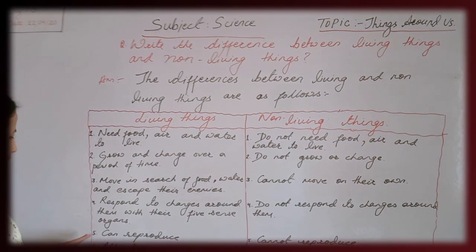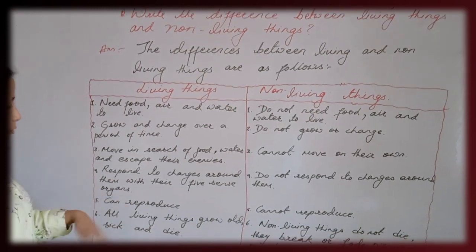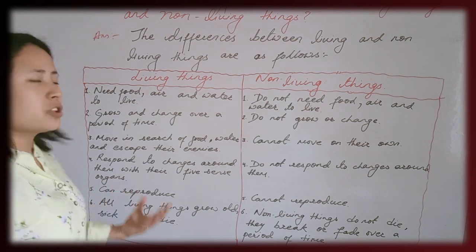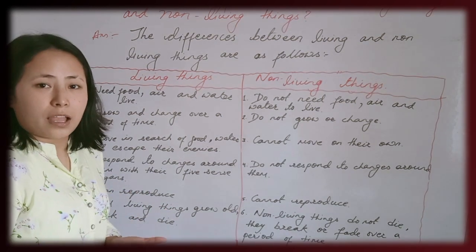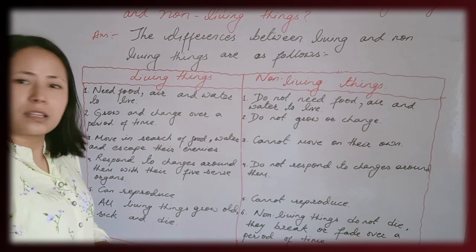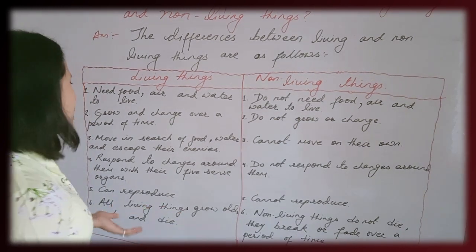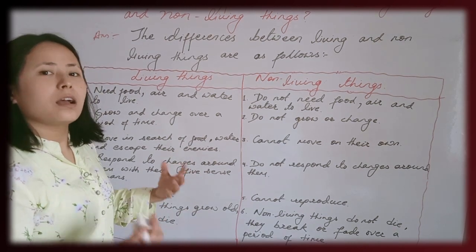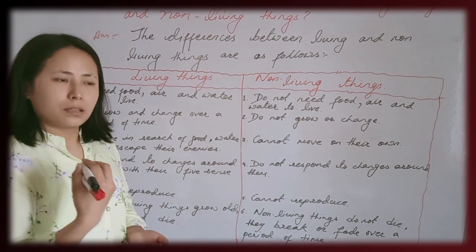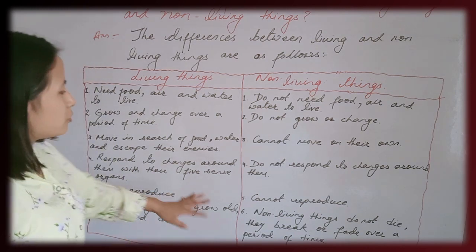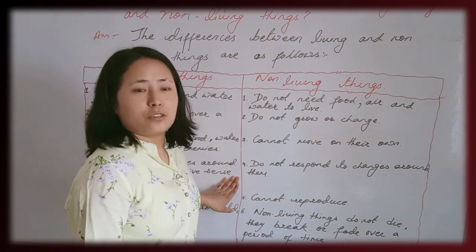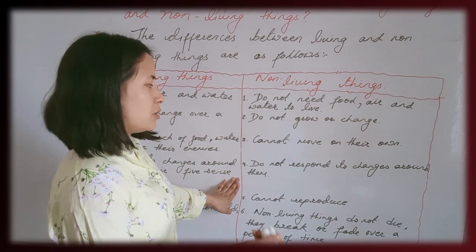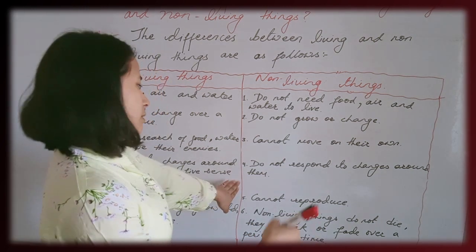Number five: living things can reproduce. Living things can reproduce — they give birth. Humans, animals, and plants can all reproduce. Plants are also born in the same way but through their own process. Non-living things cannot reproduce on their own.